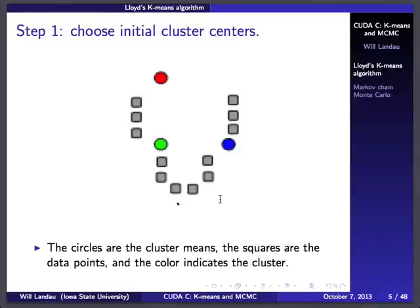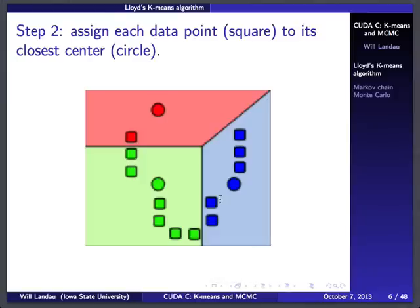We're going to iteratively move the cluster centers and regroup the points. Step one is choosing the initial values. Step two is assigning each data point to its closest center — we take each square and find the circle it's closest to. This square is closest to the red circle, so it's in the red group. The green boxes are turned green because they're closest to the green circle.